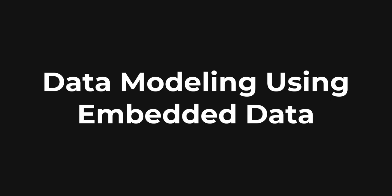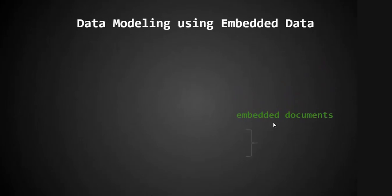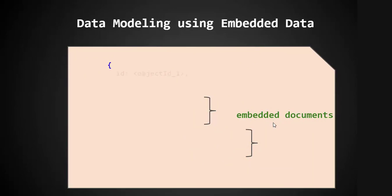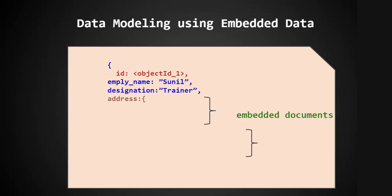In this lecture we are going to discuss the second approach used for data modeling in MongoDB: embedded data. Let's look at what embedding a document in MongoDB means. Suppose we have a document with an ID, an employee name, and a designation — three key-value pairs in this document.